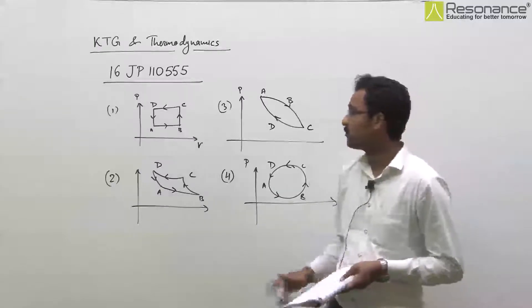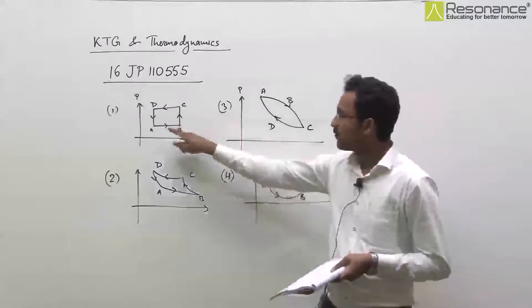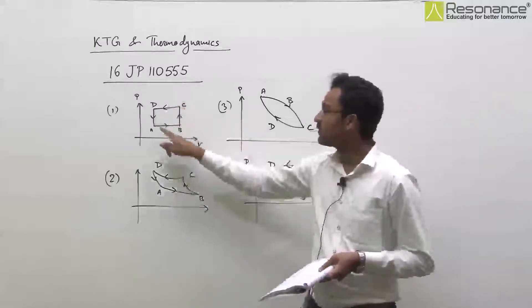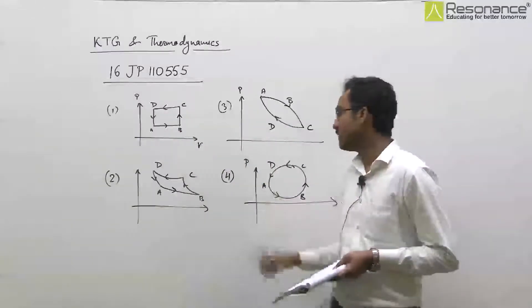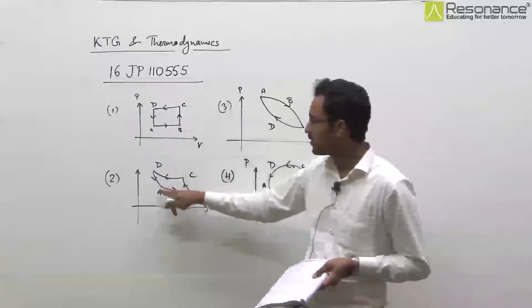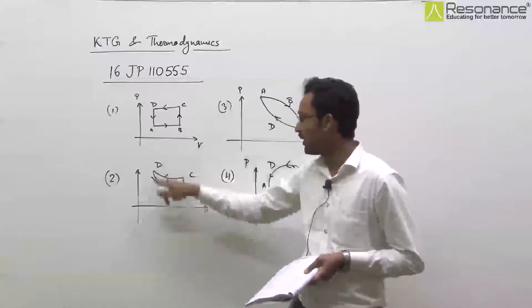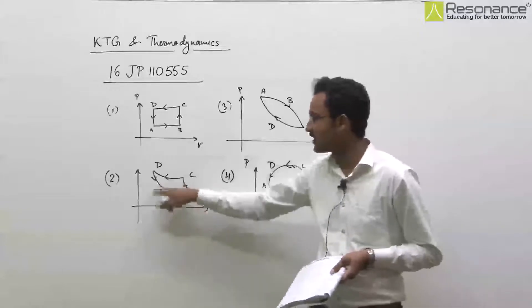In this question, gas is taken through four processes in each of the graphs and we are asked about the change in internal energy when the gas reaches the initial state again.